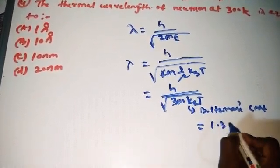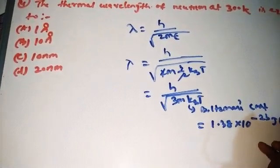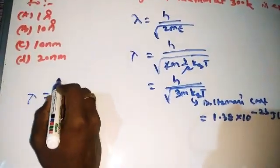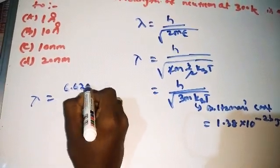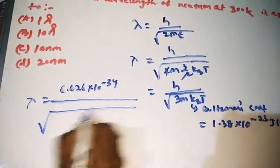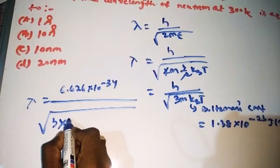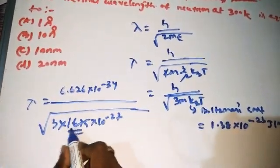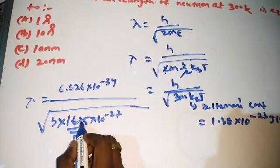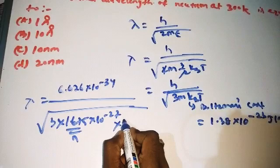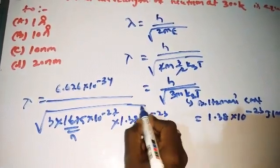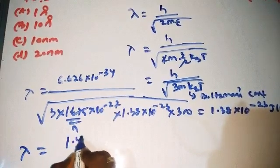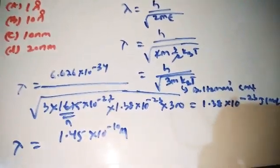k_B = 1.38 × 10⁻²³ J/K. λ = 6.626 × 10⁻³⁴ / √(3 × 1.675 × 10⁻²⁷ × 1.38 × 10⁻²³ × 300). The result is approximately 1.45 × 10⁻¹⁰ meters.